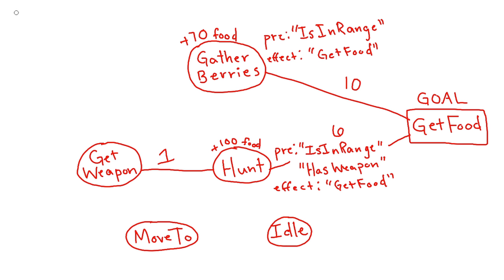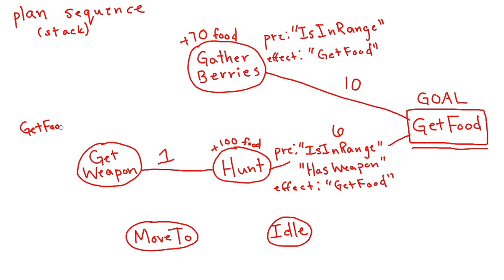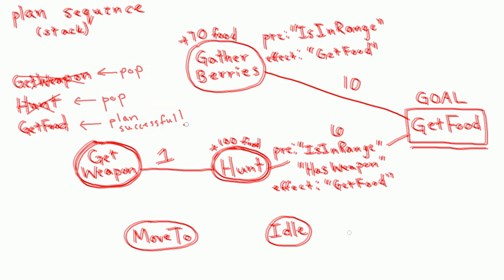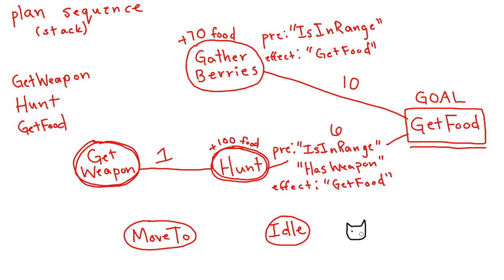Instead of viewing it as a benefit — like hunting gives you 100 food and berries give you 70 — we're going to view this as a cost. So gathering berries is slightly more costly than hunting. Let's say the cost of gather berries is 10, hunt is 6, and get weapon is 1. So when we design this graph, we want to find the shortest path between these leaf nodes or starting points and our goal. We'd prefer to hunt even with the extra precondition because the cost is lower, or you could say the benefit is higher for hunting. And as long as your logic is correct, the principles remain the same.